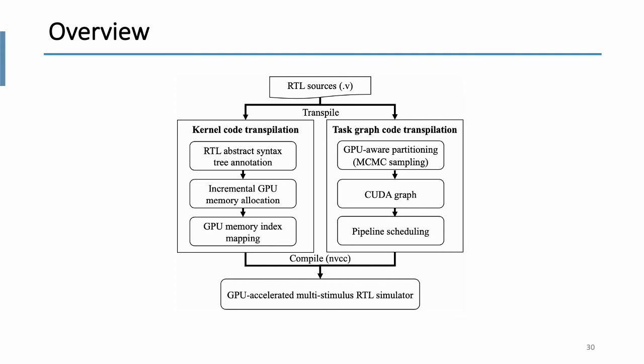Here is the overview again for RTLflow. So, RTLflow consists of two parts, kernel code transpilation and test graph code transpilation. In kernel code transpilation, we annotate an RTL AST that is generated by Verilator's parser and transpile the annotated RTL AST into C++ and CUDA using GPU memory allocation and mapping algorithms. In test graph code transpilation, we partition the RTL AST graph into a GPU test graph using a sampling-based algorithm. We execute the GPU test graph using modern CUDA graph to avoid runtime overhead in simulation cycles. To further improve the performance, we introduce a pipeline-based scheduling to further explore more parallelism in the cycle.